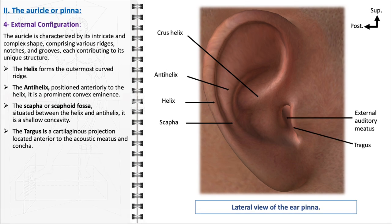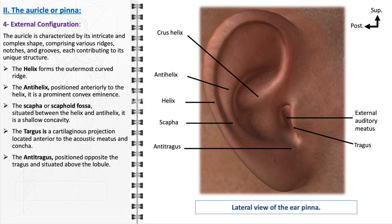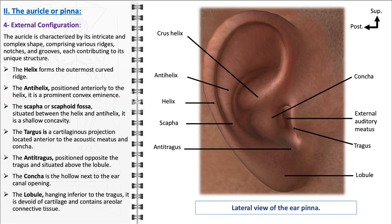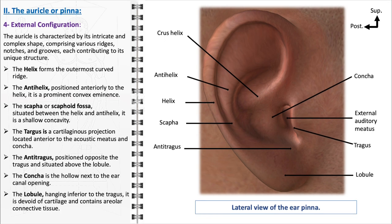The tragus, a cartilaginous projection located anterior to the acoustic meatus and concha, plays a vital role in protecting the ear canal from external particles and aids in the localization of sound. Opposite the tragus, the antitragus is positioned above the lobule. Together, the tragus and antitragus frame the entrance to the ear canal, aiding in the acoustic reflection and refraction of sound waves. The concha, the hollow next to the ear canal opening, is crucial for funneling sound into the ear canal. Lastly, the lobule, hanging inferior to the tragus, is devoid of cartilage and is composed of areolar connective tissue, providing flexibility and durability to the lower part of the auricle.